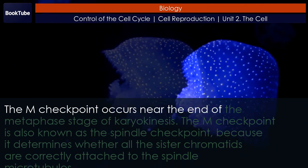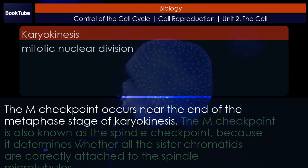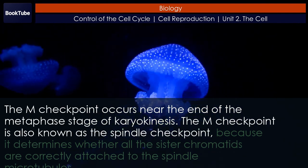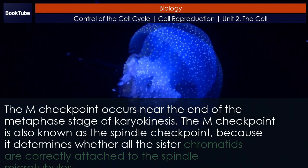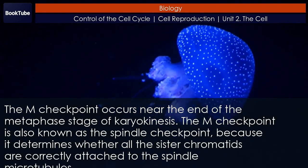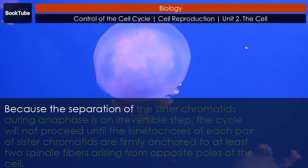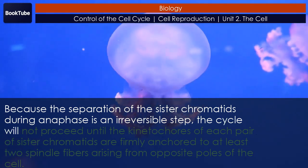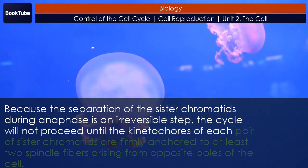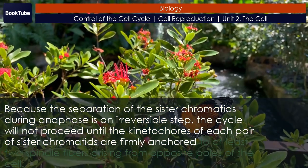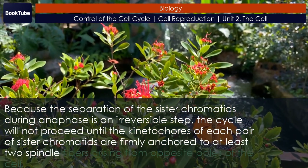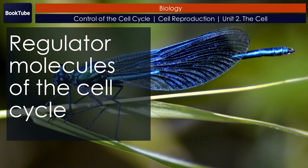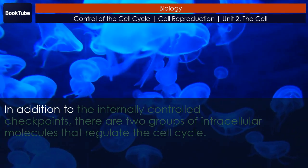The M checkpoint occurs near the end of the metaphase stage of karyokinesis, and is also known as the spindle checkpoint because it determines whether all sister chromatids are correctly attached to the spindle microtubules. Because the separation of sister chromatids during anaphase is an irreversible step, the cycle will not proceed until the kinetochores of each pair of sister chromatids are firmly anchored to at least two spindle fibers arising from opposite poles of the cell.